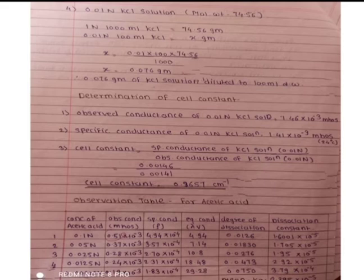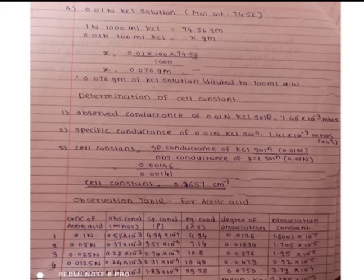For the determination of cell constant, prepare 0.01 normal KCl. Its molecular weight is 74.56 g. For 1 normal 1000 ml, 74.56 g of KCl powder is needed. So for 0.01 normal 100 ml: x = (0.01 × 100 × 74.56) / 1000 = 0.076 g. Dissolve 0.076 g of KCl in 100 ml distilled water.